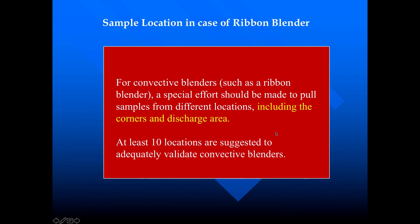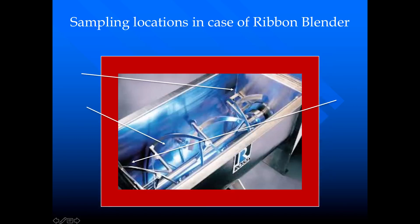In the case of a ribbon blender — a convective blender — a special effort should be made to pull samples from different locations including the corners and the charge area. At least ten locations are suggested to adequately validate the convective blender. Here is the diagram for the ribbon blender, showing sample locations from the corners and the middle.